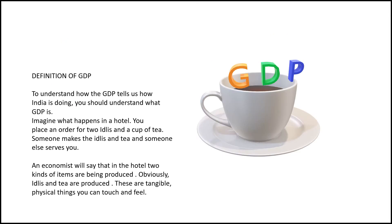In the GDP definition, economists talk about goods and services. Imagine you go to a hotel. The hotel produces two items — one idli and one cup of tea. These are things you can touch and feel — they are physical, tangible items. In economics, these tangible, physical items that you can feel are called Goods.